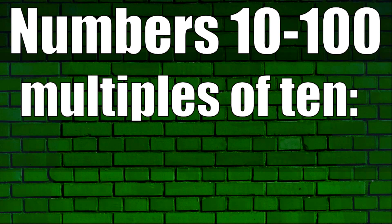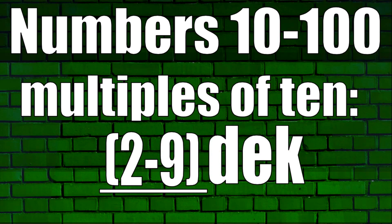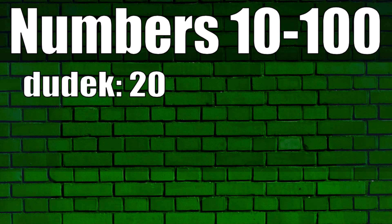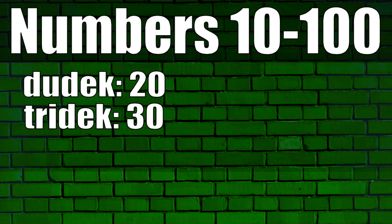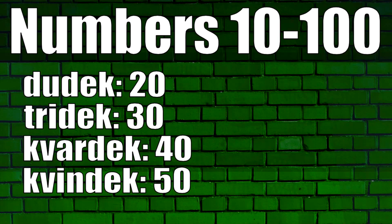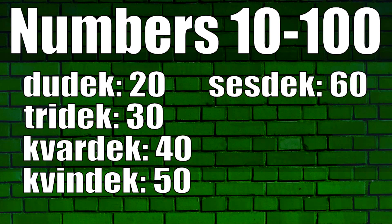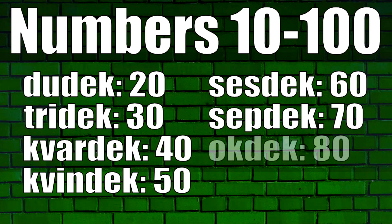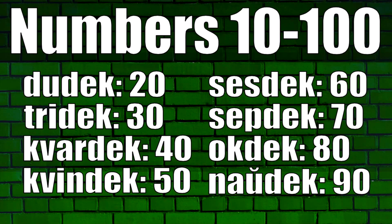For multiples of 10, you just say any number from 2 through 9 plus dek with no space in between. So we have: dudek 20, tridek 30, kvardek 40, kvindek 50, sesdek 60, sepdek 70, okdek 80, naudek 90.